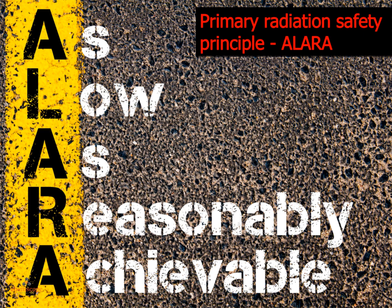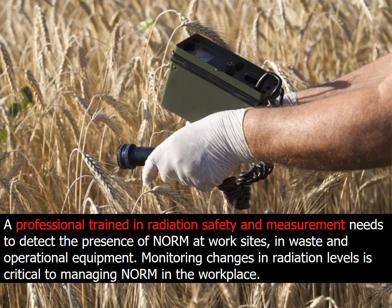The primary radiation safety principle is to keep exposure to radiation as low as reasonably achievable. A professional trained in radiation safety and measurement needs to detect the presence of NORM at work sites, in waste, and in operational equipment. Monitoring changes in radiation levels is critical to managing NORM in the workplace.